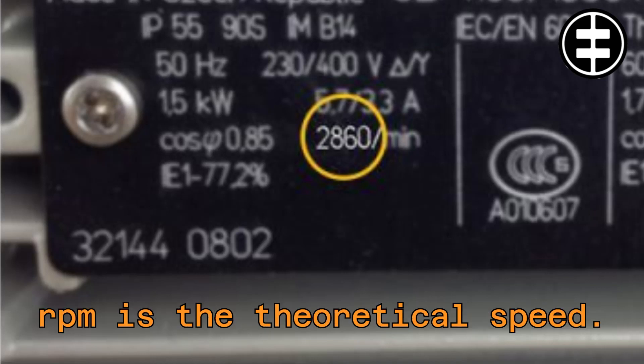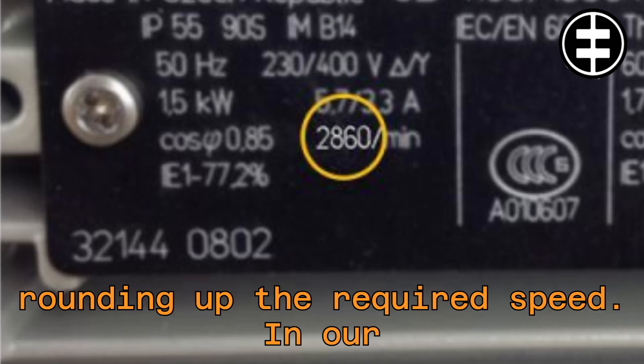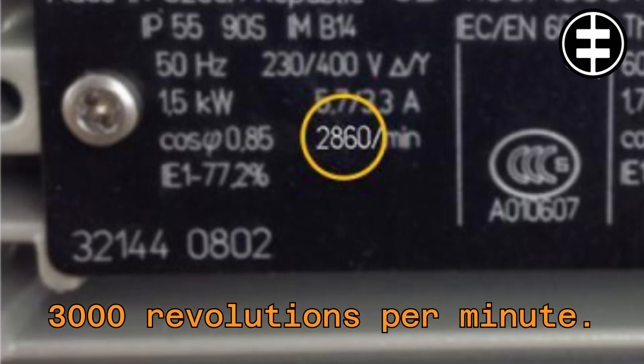This 3,000 RPM is the theoretical speed. So, select the correct speed by rounding up the required speed. In our example, a two-pole motor with 3,000 revolutions per minute.